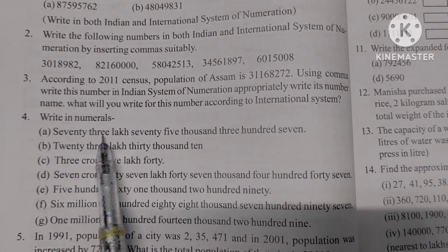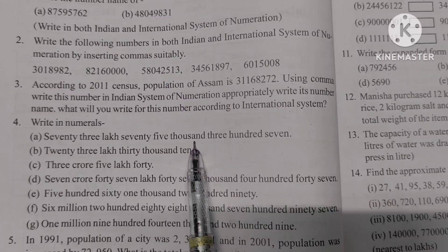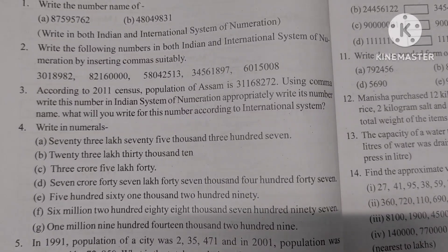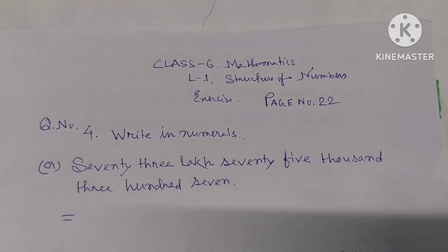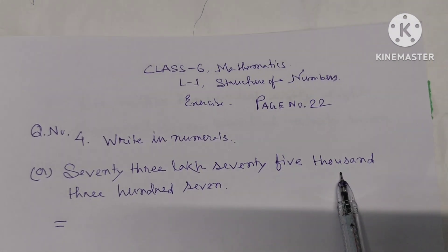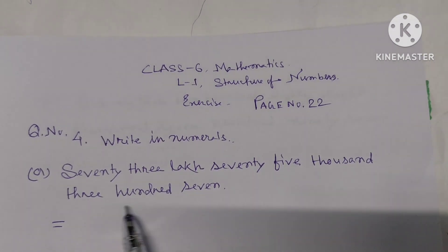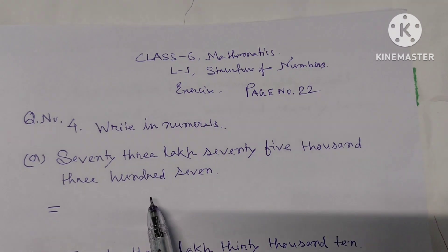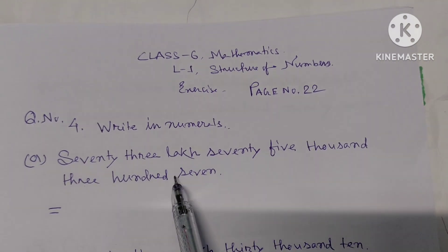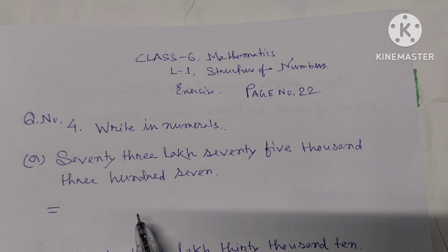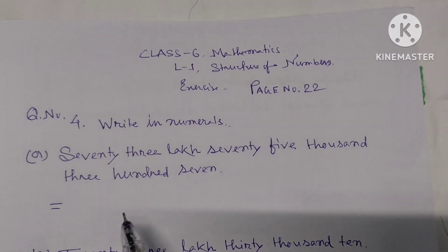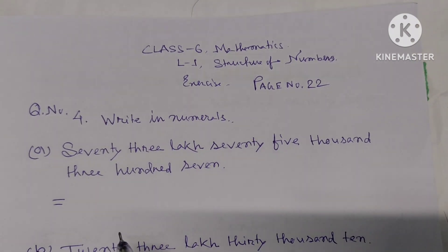Part (a): seventy-three lakh seventy-five thousand three hundred seven. We have to write this in numerals. Before writing this in numbers, we can first write the place value chart.